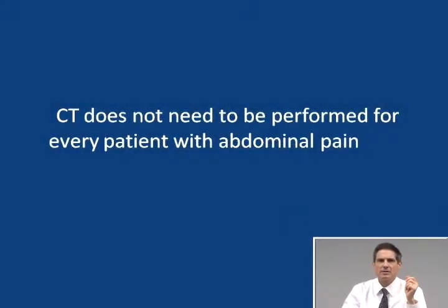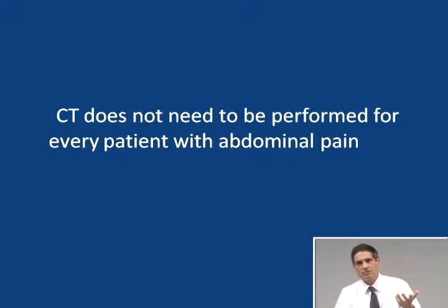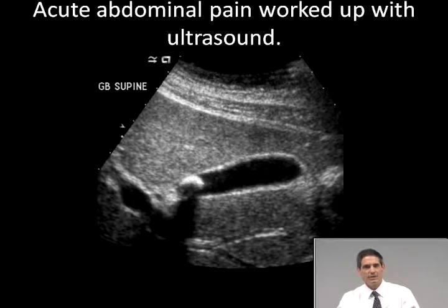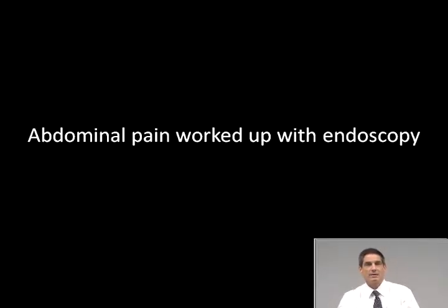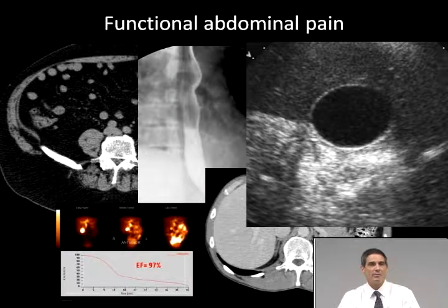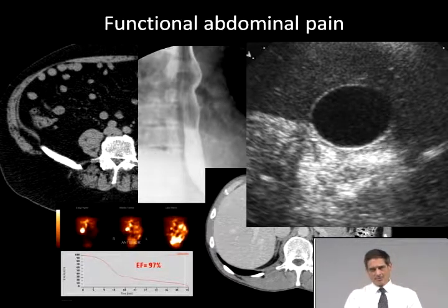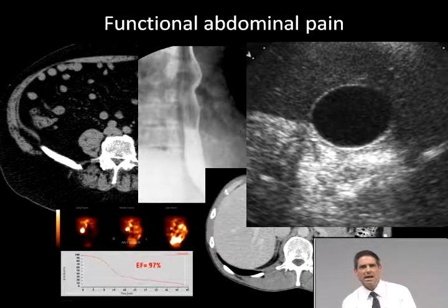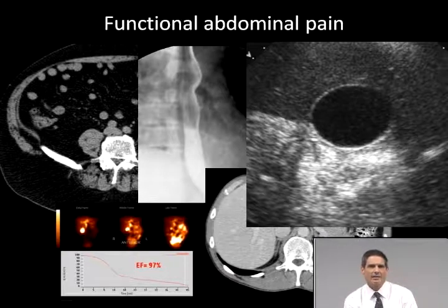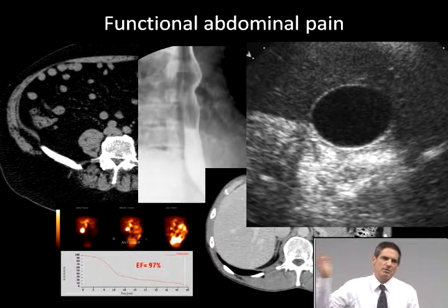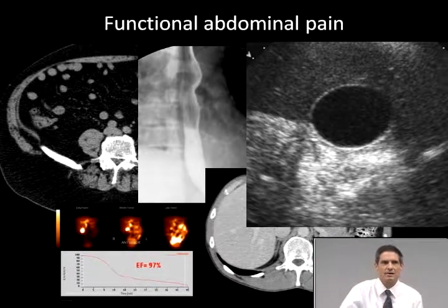CT doesn't need to be performed in every patient with abdominal pain. If you've worked up abdominal pain with ultrasound because it's right upper quadrant, you're not really going to need CT. If you've already got a diagnosis from an endoscopic result, you don't really need CT. If you have what's called functional abdominal pain — defined as pain persisting greater than six months with no physiologic disease, no relation to physiologic events like meals or defecation or menses, and pain interfering with daily function — this pain is often chronic and has usually been worked up previously without a diagnosis. Some of these patients may end up having adhesions or endometriosis, but if the workup's already been done and is negative and symptoms haven't changed, there's not a lot of point doing it again.